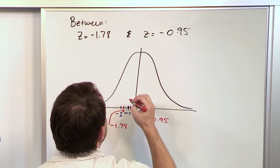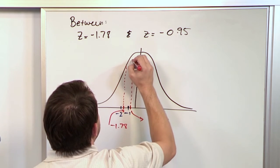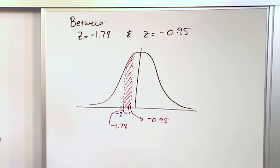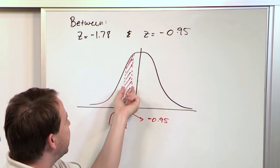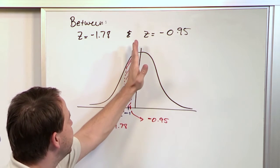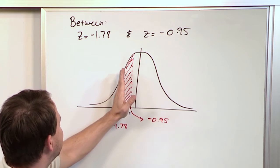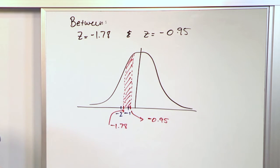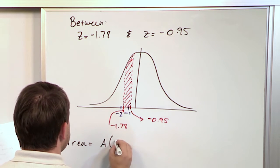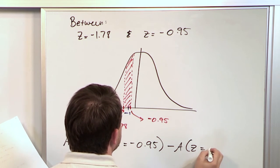These values are kind of compressed together, but the area I care about is that little skyscraper of area lying between them — basically a rectangular shape with a curved top. I need to find the larger table value, which gives area to the left of z, then subtract the smaller one. So the area equals the table value at z = -0.95 minus the table value at z = -1.78.